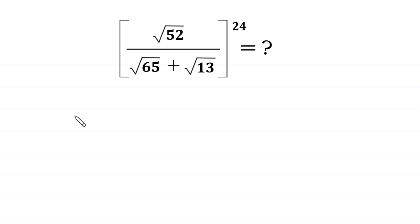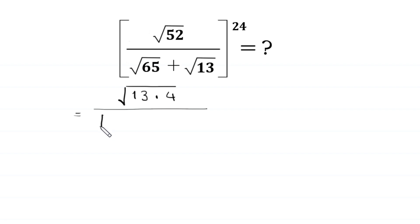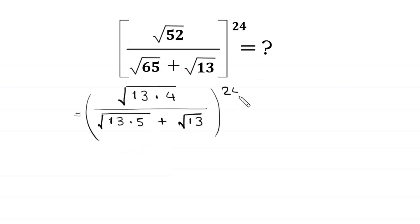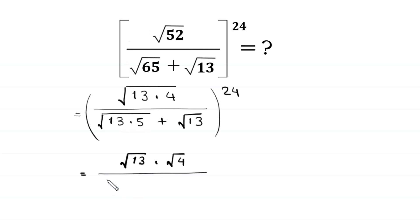Root 52 can be written as root of 13 times 4, divided by root 65 which can be written as root of 13 times 5, plus root 13, whole to the power 24. Next, root of 13 times 4 becomes root 13 times root 4, divided by root of 13 times 5 which becomes root 13 times root 5, plus root 13, whole to the power 24.